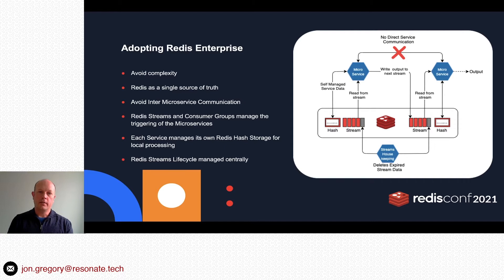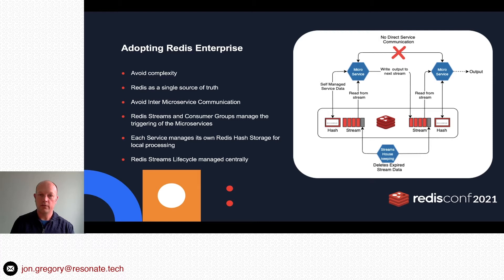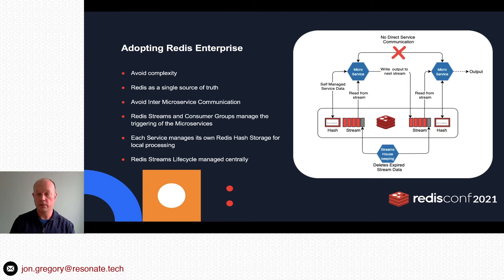In adopting Redis Enterprise, we made a big effort to avoid complexity. Redis would be the single source of truth, and all services would communicate via Redis — all data sharing, all state, all data communication would go through Redis with no service-to-service communication. That meant frictionless addition of new services, easy scaling, and the ability to drop or split services as we went through the agile development process.